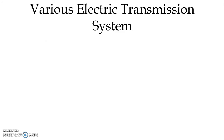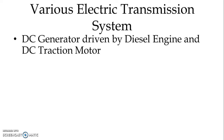Now let us see various electric transmission systems possible. We have mainly three different systems. The first system is a DC generator driven by a diesel engine and a DC traction motor. The required motive power or tractive effort is generated by the DC traction motor, and DC supply is provided through the DC generator which is driven by the diesel engine.